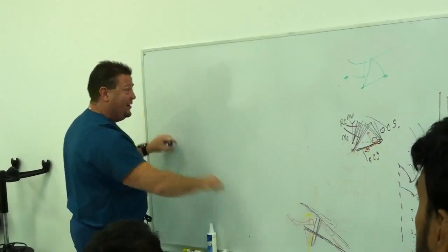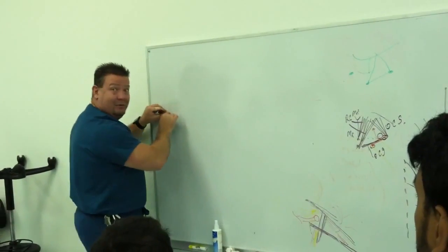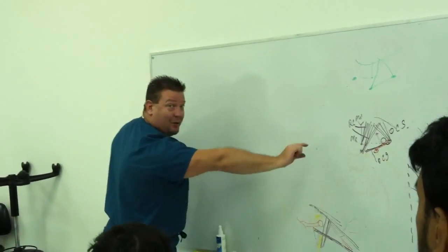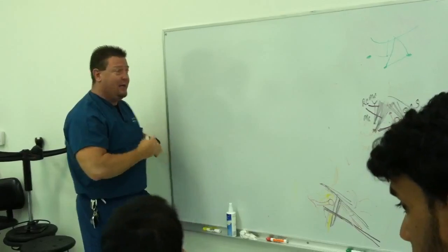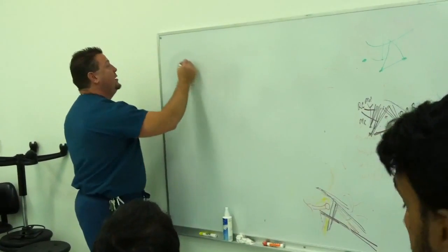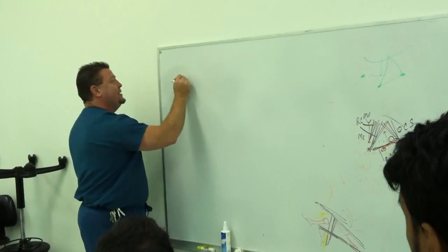T1 does not need to go across to there. C8 does not need to go across to there. It can go anywhere. Okay, so let's draw it pretty this time.